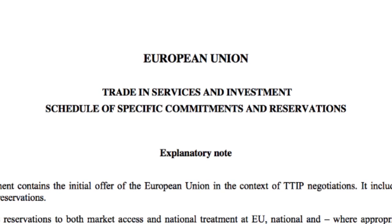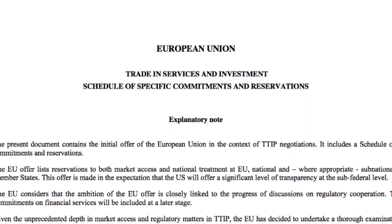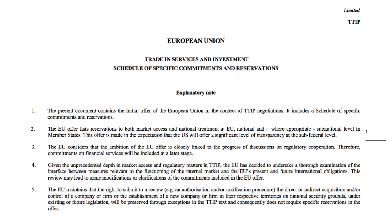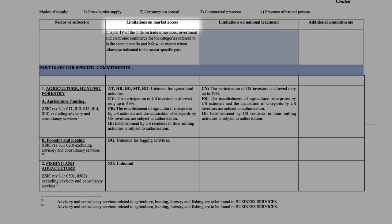How do trade negotiations work when it comes to services? One country will offer up certain sectors to be liberalised and the other country will say we want more, we want to open up more markets. You write down the different sectors and subsectors that you're prepared to offer in a schedule of commitments, and these commitments are made on paper and can be seen by the other side. The schedules are broken down into two main columns: the first is Limitations on Market Access, and the second is Limitations on National Treatment — how corporations will be treated once they've come into your markets.